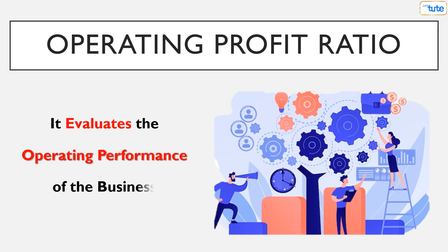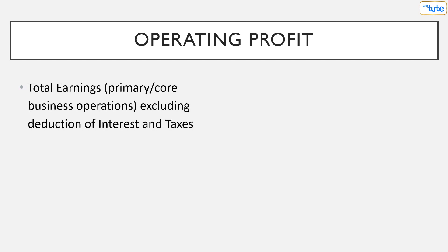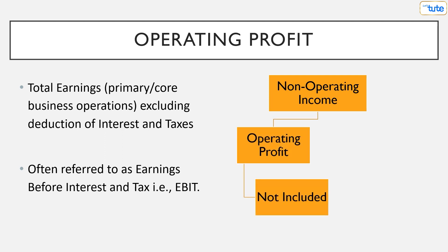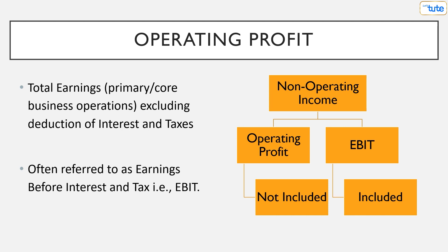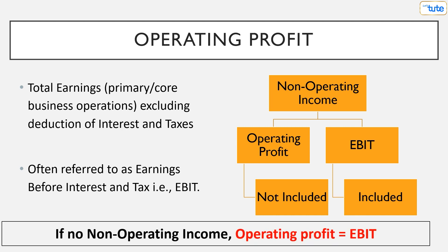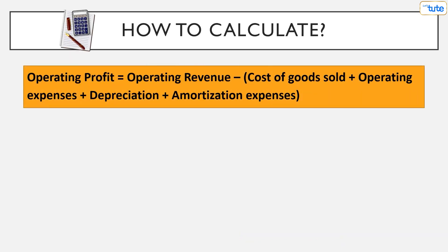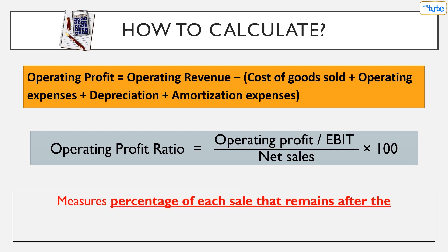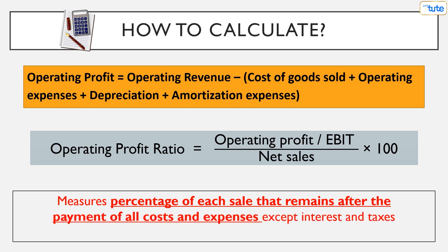For further understanding, let us study the operating profit ratio, which evaluates the operating performance of the business. Operating profit is the total earnings of the business derived from its primary or core business operations, excluding the deduction of interest and taxes — often referred to as earnings before interest and tax, i.e., EBIT. If there is no non-operating income, operating profit will be equal to EBIT. Operating profit equals operating revenue less cost of goods sold, operating expenses, and depreciation and amortization expenses. The operating profit ratio is found by dividing operating profit (EBIT) by net sales multiplied by 100.